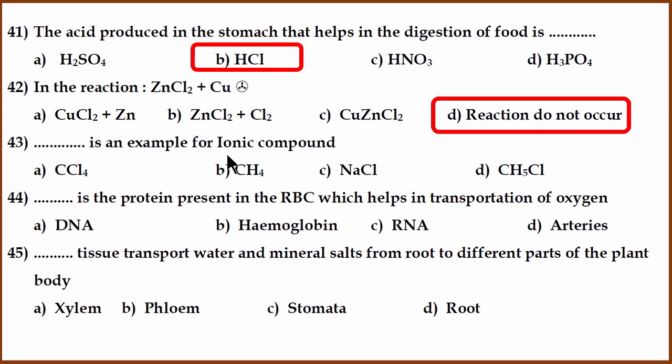Third question. What is an example of an ionic compound? NaCl is an example of an ionic compound. The other options are carbon compounds - they are not ionic, they are covalent bonds. NaCl on the other hand is metal and chlorine. So it will be an ionic bond.